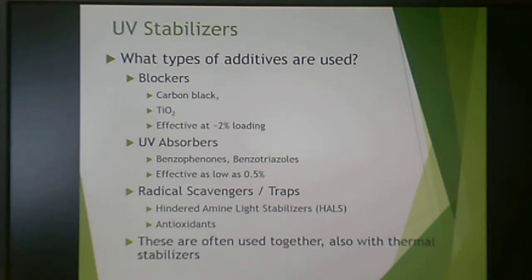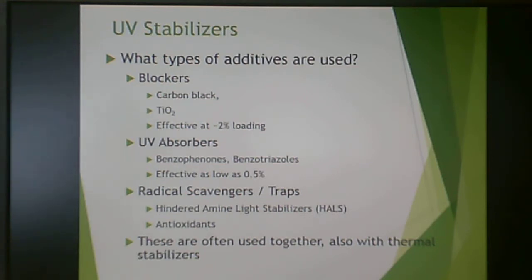You also have radical scavengers or radical traps — hindered amine light stabilizers, or HALS — and antioxidants. Polymers need antioxidants for the same reason people need antioxidants, so this is my little PSA: take your multivitamin, fight the free radicals. Typically these are all used together — a little bit of carbon black, a little bit of benzotriazole, and a little bit of HALS to get maximum impact for the minimum number of additives and cost.